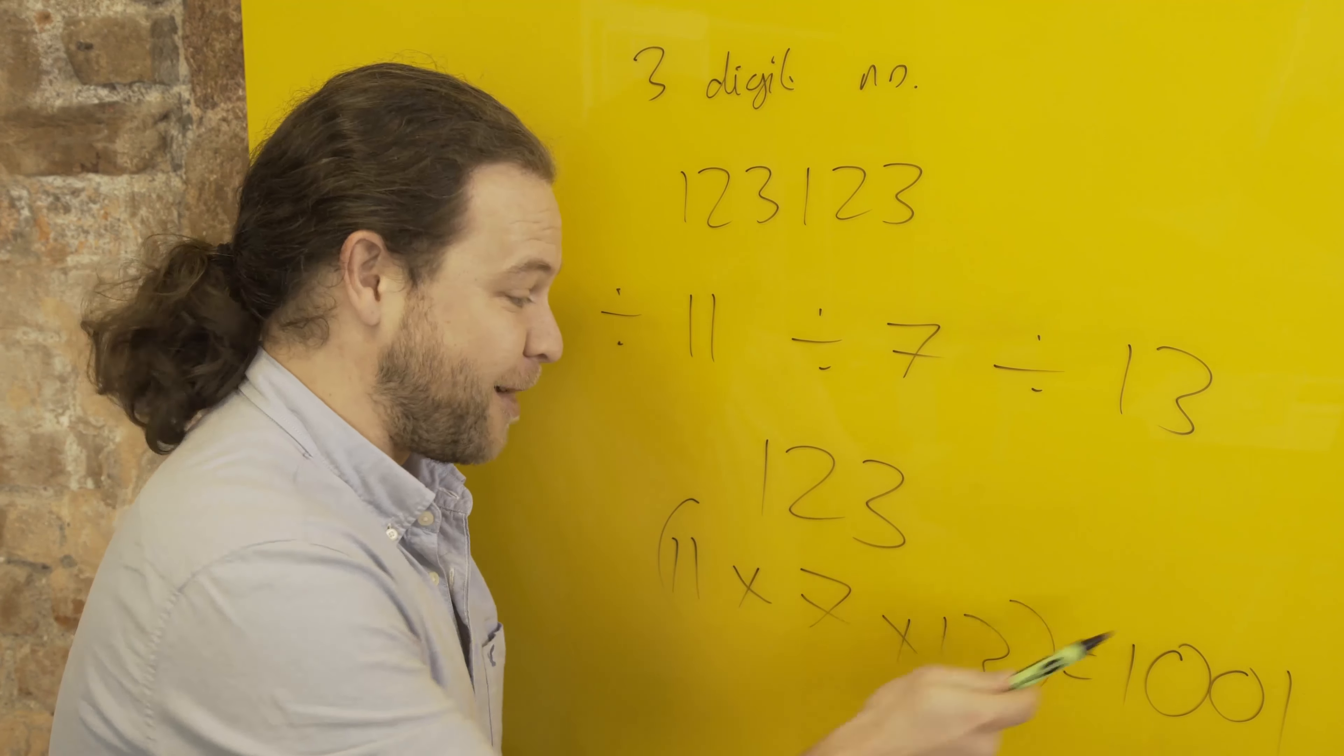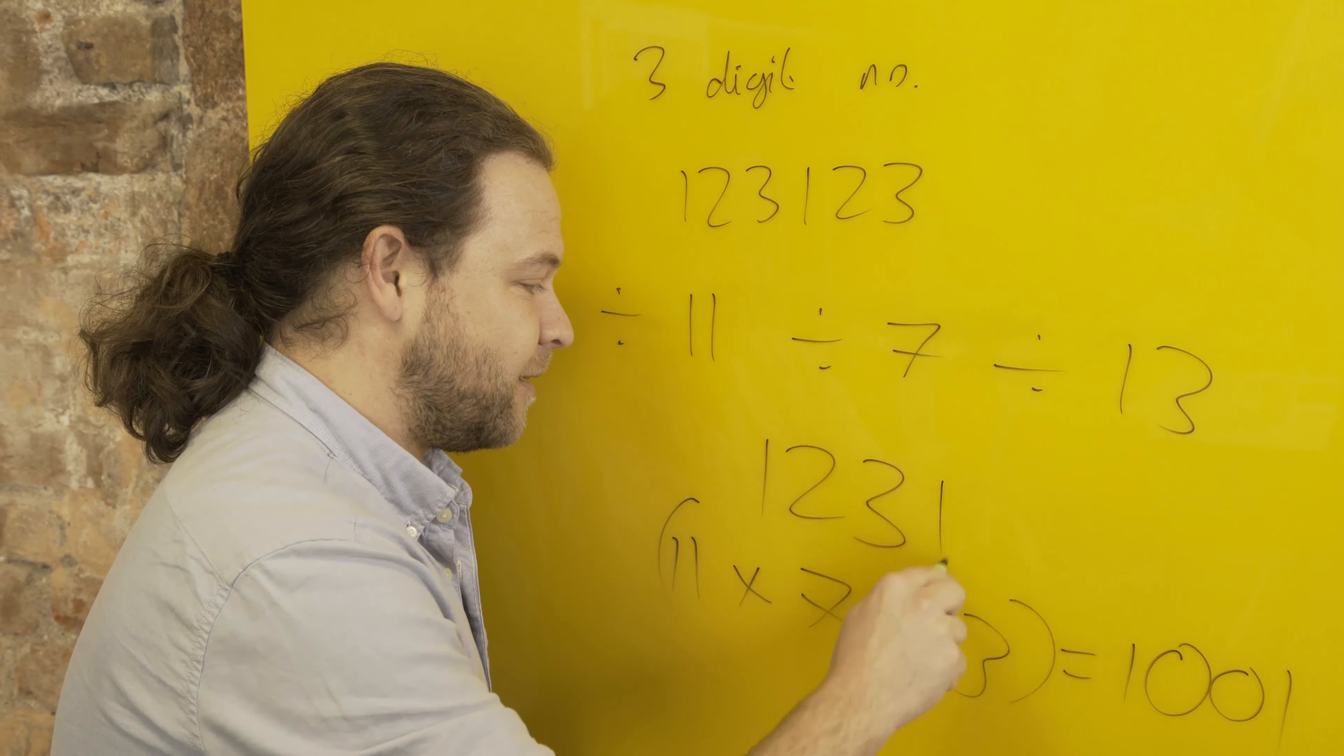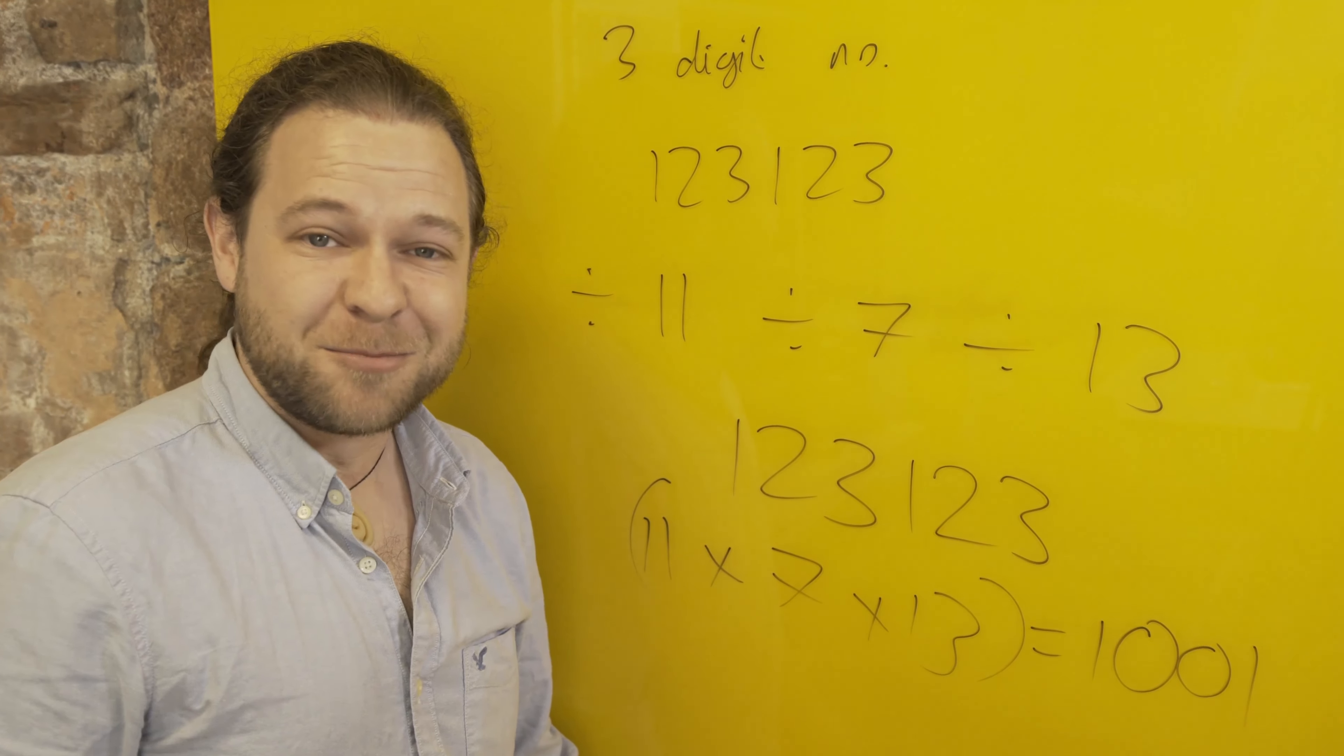So the trick is really rubbish. All I'm asking you to do is pick a number, multiply it by a thousand and one, and then divide it by a thousand and one. It's not too much of a surprise you end up back where you started.